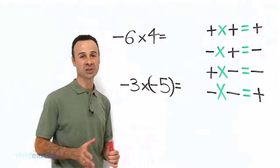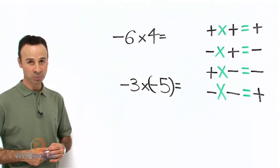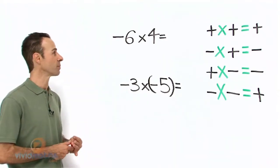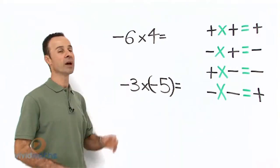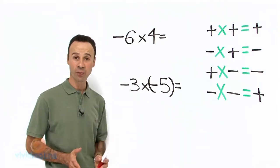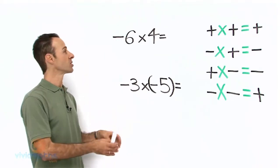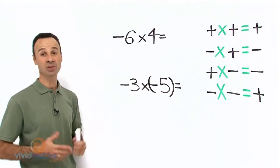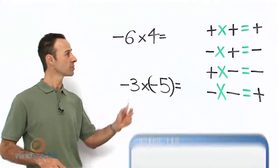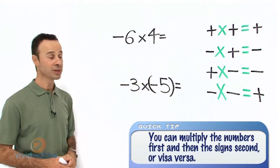Now that we know that system, let's apply it to some directed number examples. Up here we have minus six times four—one is negative, one is positive. So let's multiply. First thing you do is just look at the numbers ignoring the signs. Six times four is twenty-four.